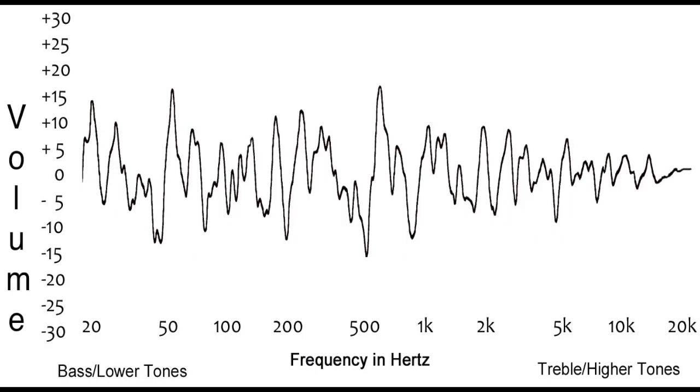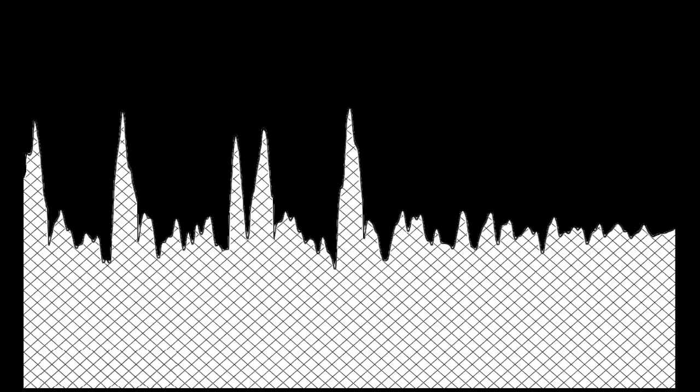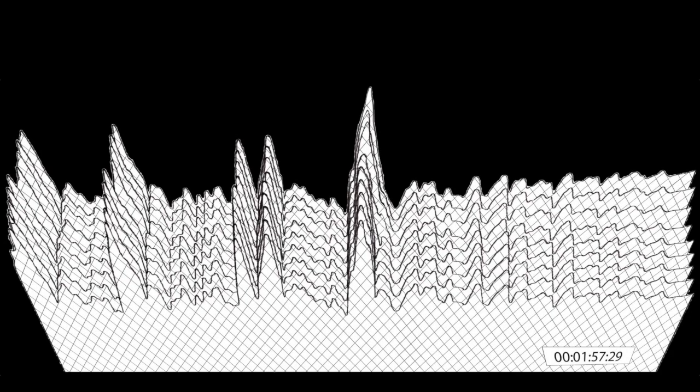Imagine a graphic equalizer displaying 1000 bands instead of just a few. If we use this to take a snapshot of the music's frequencies every few milliseconds, then line up all those snapshots together, we can build a 3D image of the music playing over time.